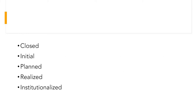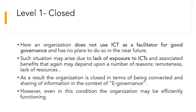It is very similar to developing a project or a product. The five levels are: first is Closed, second is Initial, third is Planned, fourth is Realized, and fifth is Institutionalized. We are going to discuss each of these levels one by one. The first level is the Closed level.